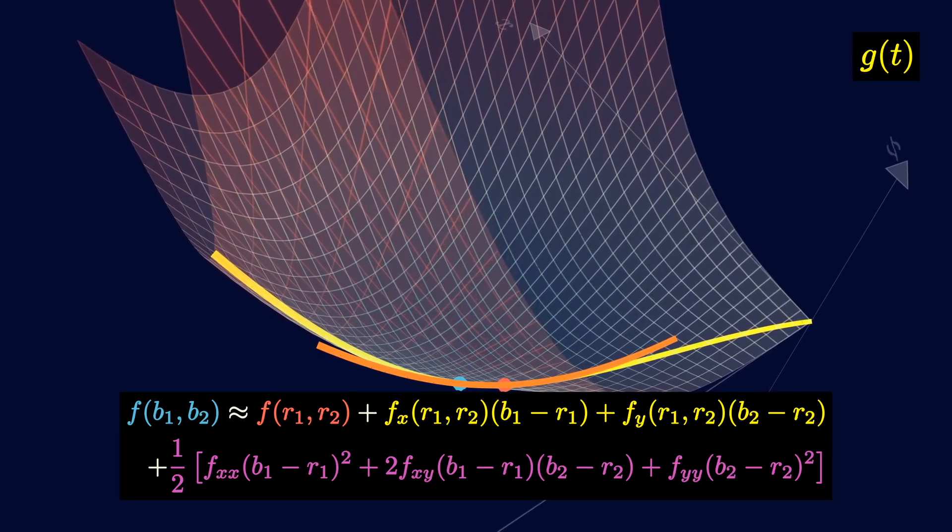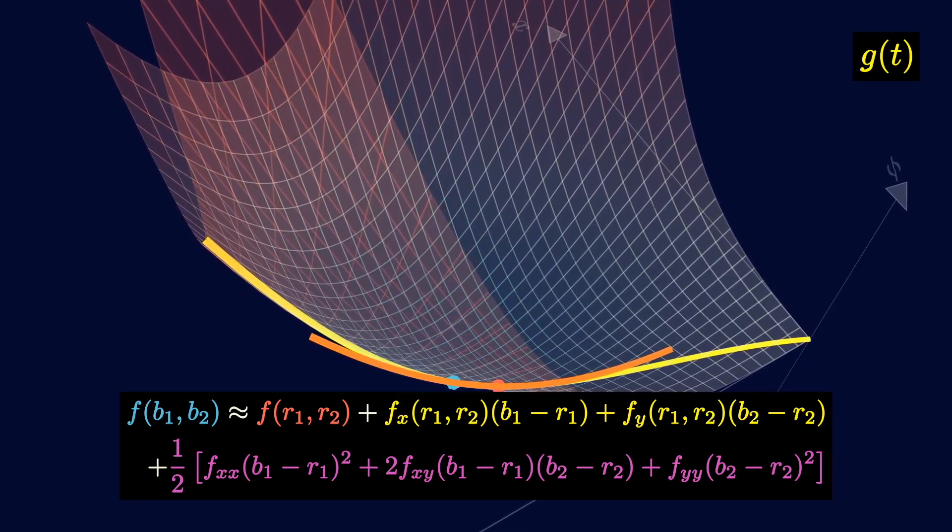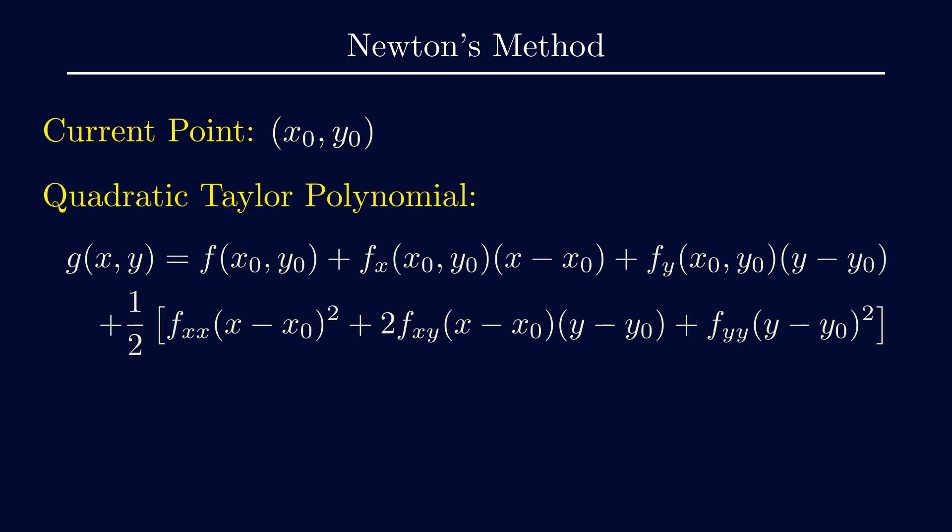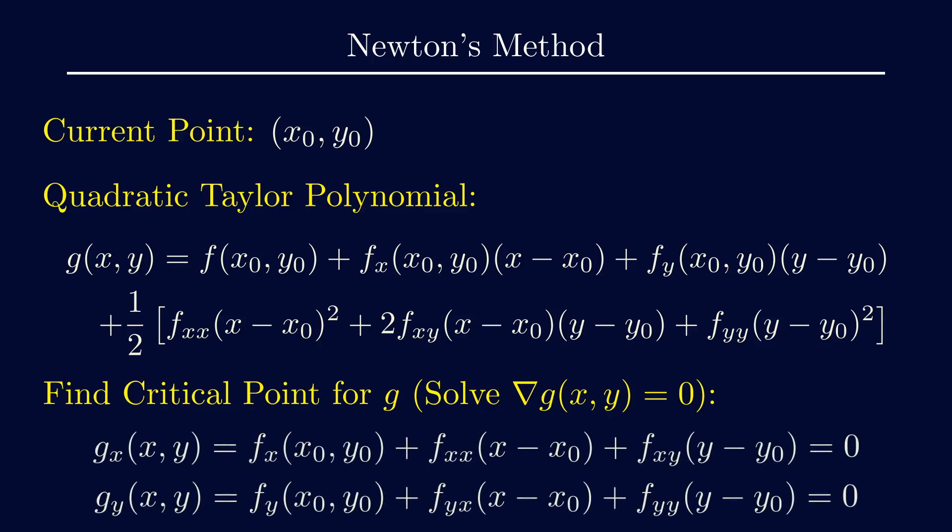Now that we have the second order Taylor polynomial, we can finally do Newton's method. Newton's method consists of starting at an initial point x0, y0, and then forming this quadratic Taylor polynomial, which we'll call g. Then we find the critical point for g, which is where the gradient is zero. This means we need to set the partial derivatives to zero. We have two equations and two unknowns, so we can solve for x and y. This gives us the next point, and then repeat these steps until we converge.